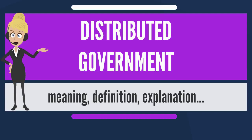The typical division creates an executive branch that executes and enforces the law as led by a head of state, typically a president, and a legislative branch that enacts,